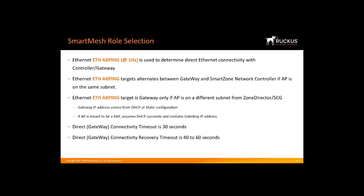The AP constantly monitors connectivity to a gateway. If there is an outage on the wired connection for more than 30 seconds, the root AP will assume the role of a non-root AP. When connectivity to the gateway is re-established for more than 30 seconds, the non-root AP will resume the role of a root AP. When gateway connectivity is restored for more than 60 seconds, the non-root AP will return to root AP status.